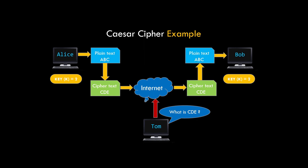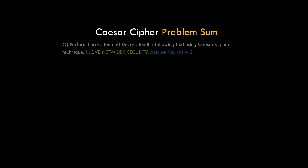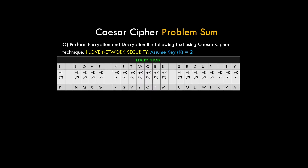Now that we've understood the working and encryption and decryption process, let's solve an example ourselves. We have to perform encryption and decryption on a given text using modified Caesar cipher technique, assuming the key as 2. Write down the text with spaces between each alphabet, or draw a table as shown in the diagram. Below each alphabet write plus 2, as the key value is 2, and we need to find the alphabet which is 2 places ahead. Calculate the alphabet 2 places ahead for all the alphabets and you'll get the encrypted string — and I'm sure you won't be able to pronounce it. That's the result of encryption.